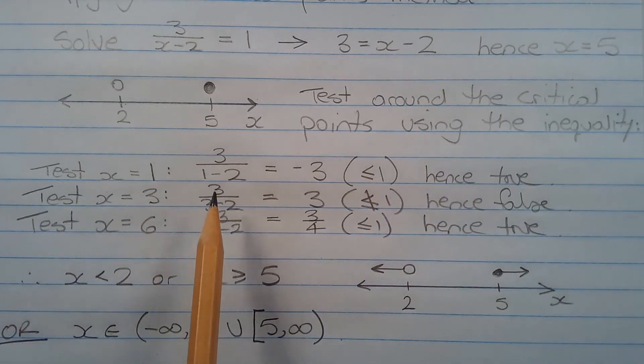Testing x equals 3: 3 over 3 minus 2 equals 3, which is not less than or equal to 1, hence false.